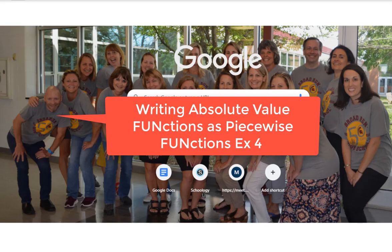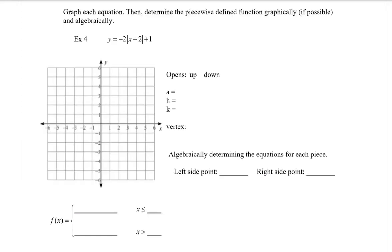What's up, my mathletes? Here we are taking a look at example number four of how to change an absolute value function into a piecewise function. So let's go ahead and take a look at our fourth and final example. Here we are with the absolute value function y equals negative two times the absolute value of x plus two plus one.